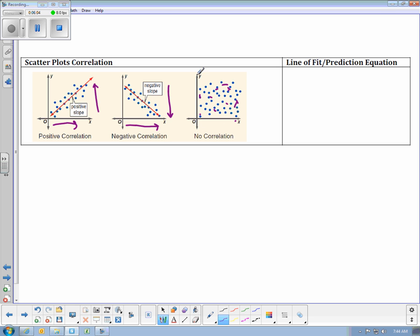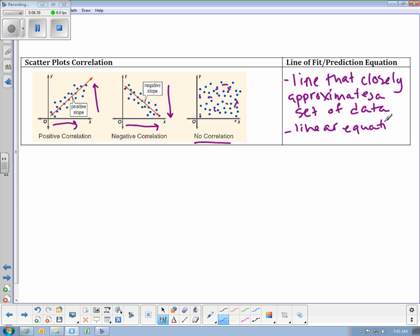And you can see there, you can't tell if it's positive, you can't tell if it's negative, so we call that no correlation. The line of best fit is the line that closely approximates a set of data. And the prediction equation is the linear equation that graphs the line of best fit.